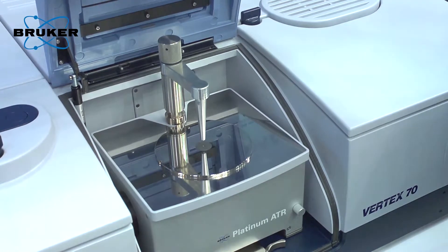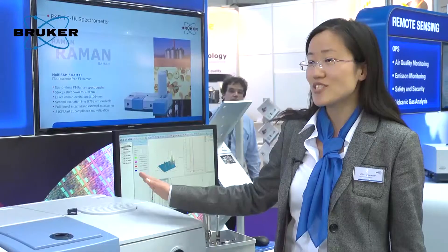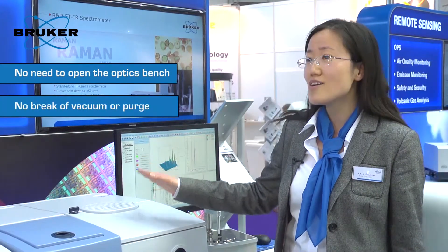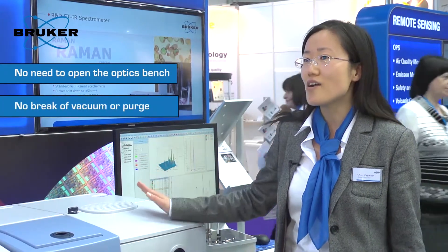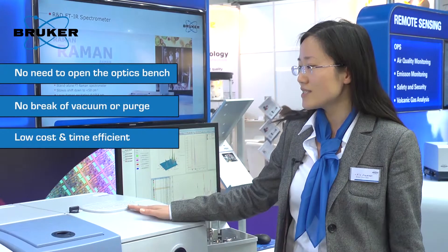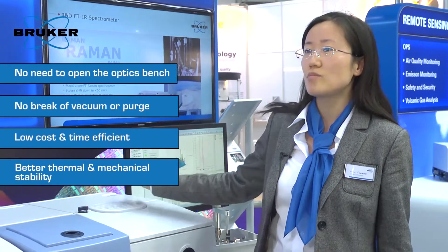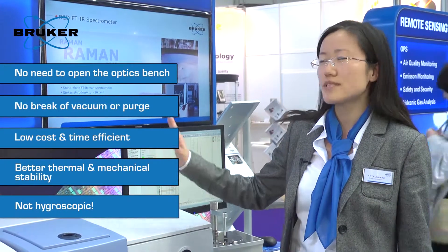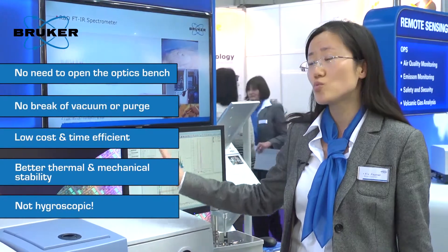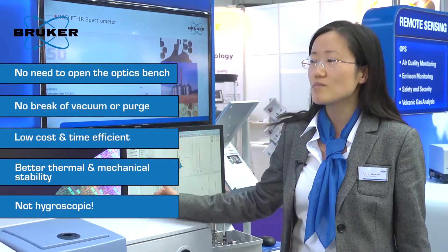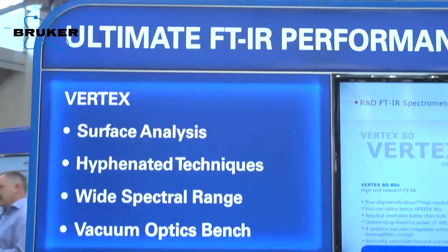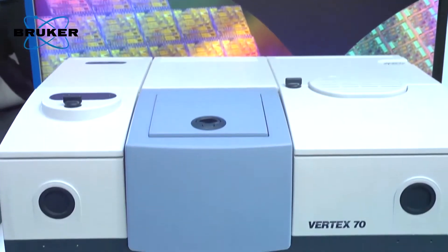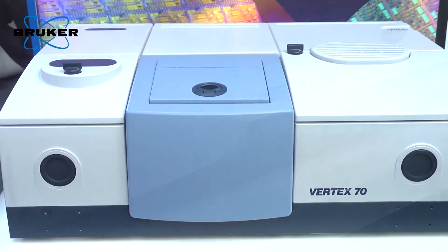Now with the recently introduced new broad range MIR-FIR beam splitter, there's no need anymore to open the optics bench. We can cover the whole spectral range from 6,000 wavenumber to 10 wavenumber with one beam splitter, further combined with the very new wide range MIR-FIR DTGS detector.